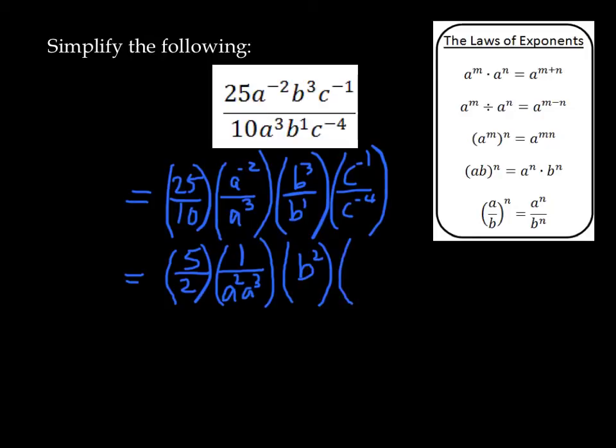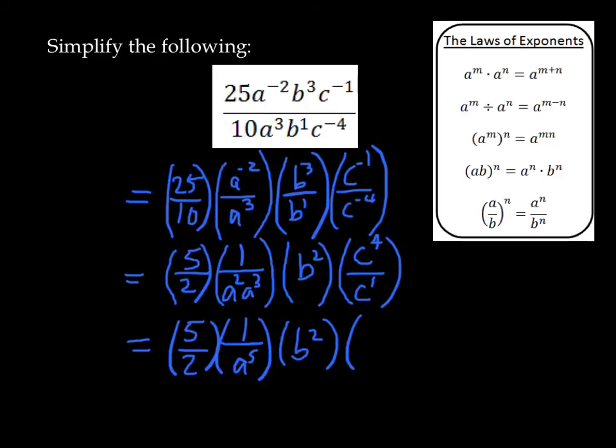When it comes to the c's, we've got negative exponents in the numerator and in the denominator. So this can be rewritten as c to the power of negative 4 in the denominator becomes c to the power of positive 4 in the numerator. And c to the power of negative 1 in the numerator can be rewritten as c to the power of positive 1 in the denominator. Let's simplify further. We now have 5 halves times 1 over a to the power of 5 by combining a squared and a cubed, times b squared, times c to the power of 3.